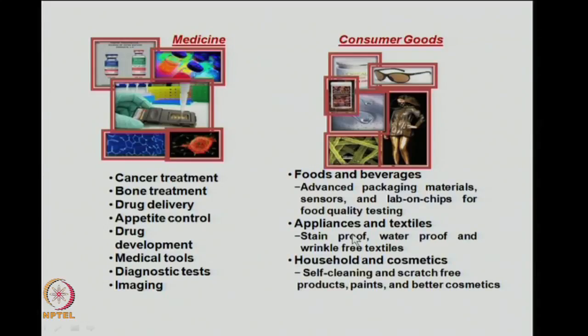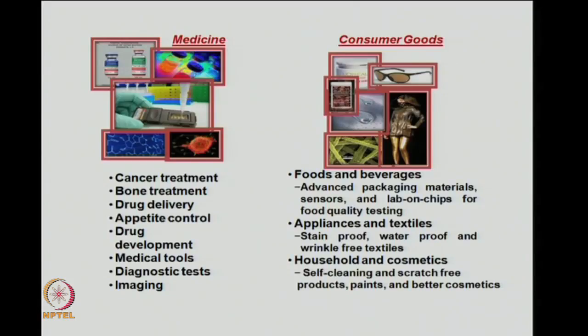Food quality testing and food packaging will rely heavily on nanomaterials. In smart appliances and smart textiles — such as stain-proof and waterproof textiles — there is already a lot of work going on with great prospects for nanotechnology. Many self-cleaning products, scratch-free products, and UV-protection cosmetics using TiO₂ or other nanomaterials are already in the market.